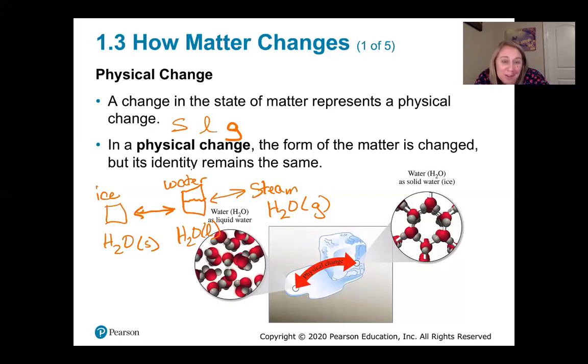You still haven't chemically changed anything. You still have H2O. All of those are physical changes where the form of the matter has changed. We went from a solid to a liquid to a gas, but its identity remains the same. This is a molecule diagram of water as a liquid. We can see the particles can arrange and move. But if we make it cold, the molecules of water are stuck in one orientation, and that's why we get it as a solid.